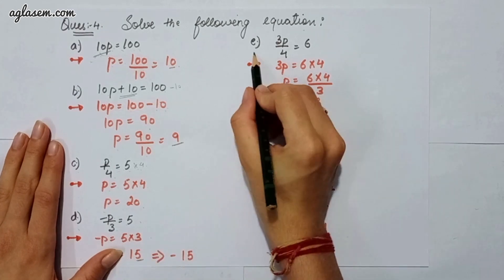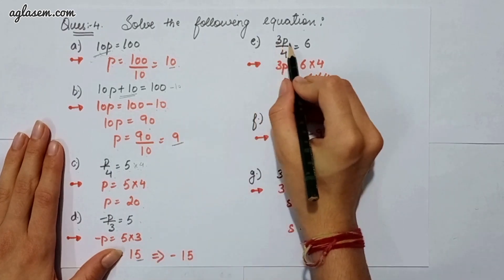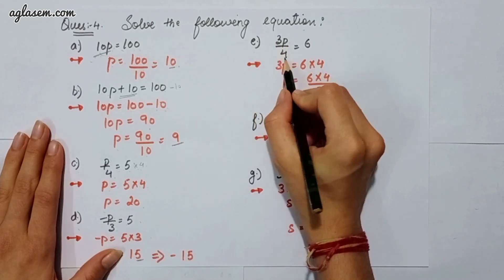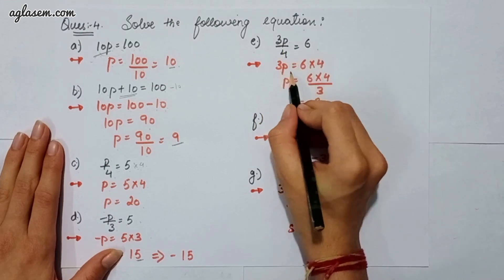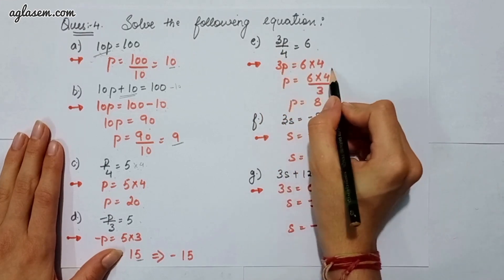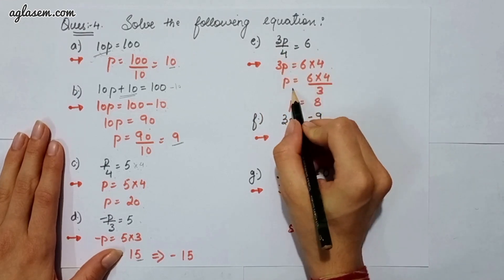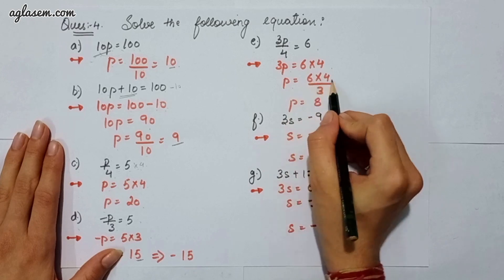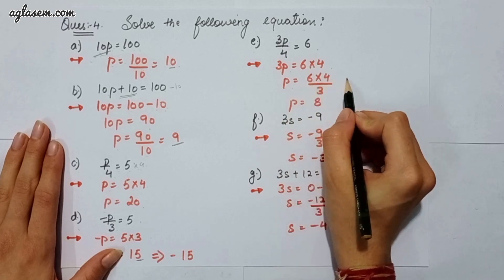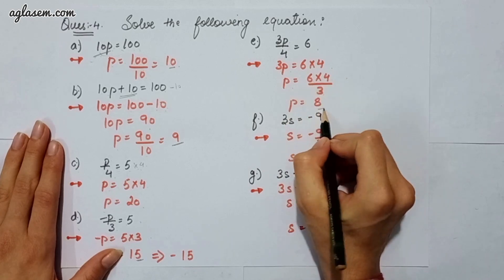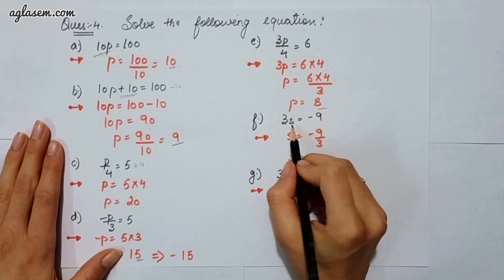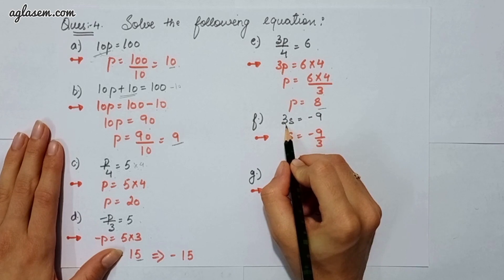The e part says 3p upon 4 is equal to 6. So 3p is equal to 6 times 4, and p is equal to 24 divided by 3, which gives you 8.